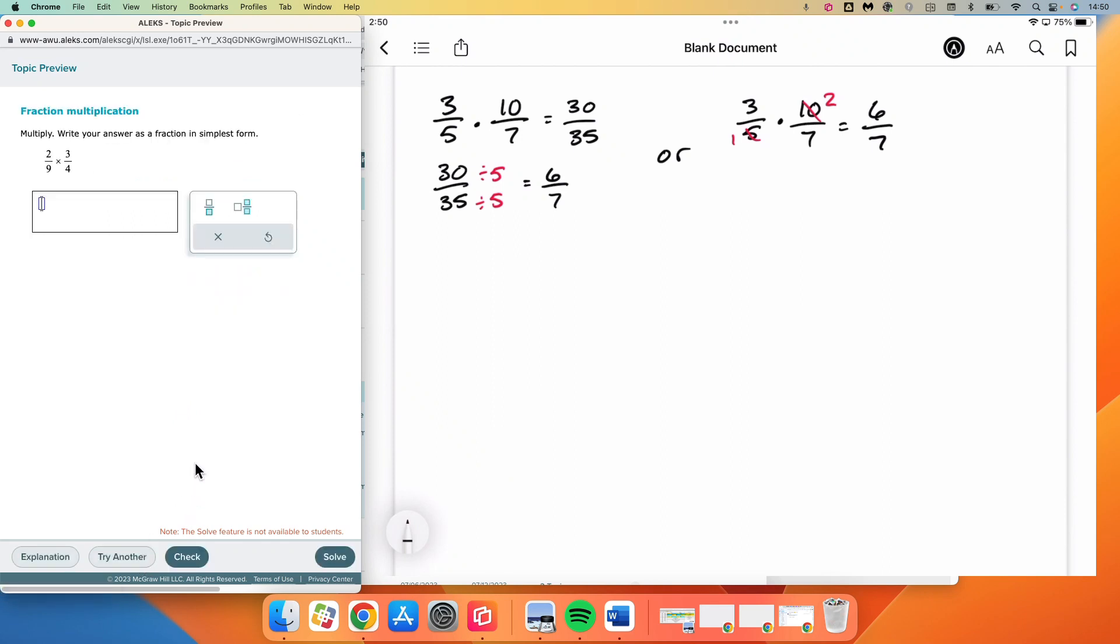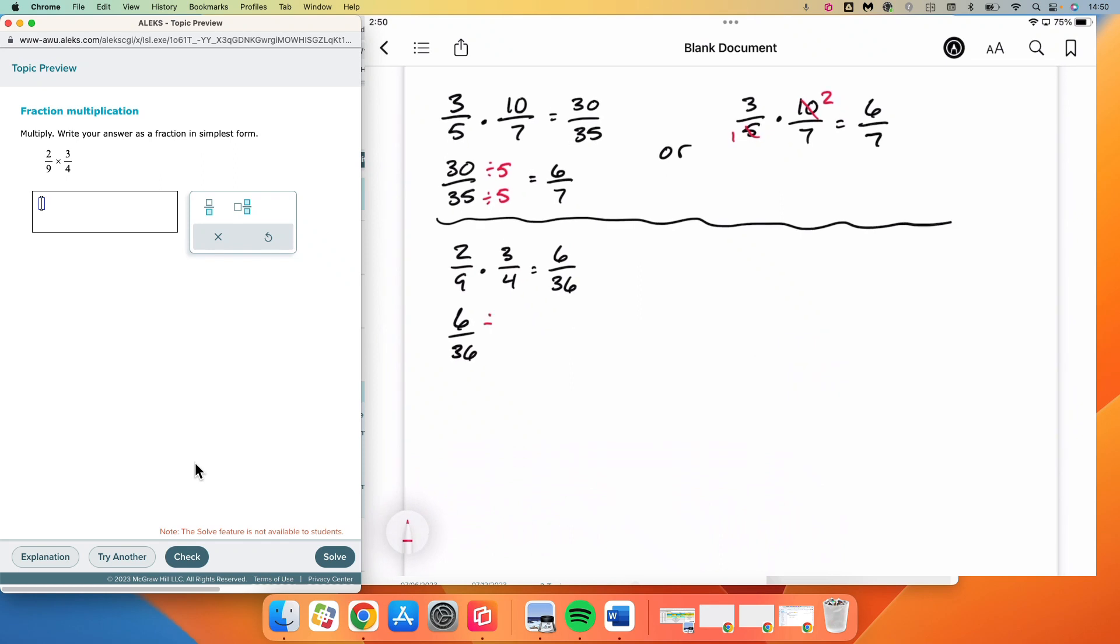Next, 2 over 9 times 3 over 4. We can just multiply straight across and get 6 over 36. Then we need to recognize that 6 and 36 both have the common factor 6. You could use 2, of course, but then you would have to divide again because you wouldn't be in simplest form yet. And we end up with 1 over 6.